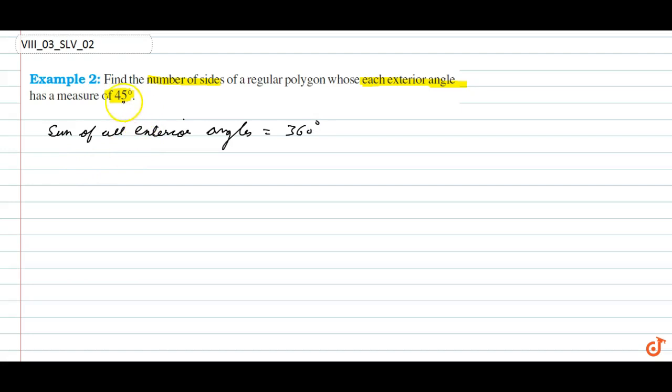So if each angle is 45 degrees, let's assume and find how many exterior angles there will be. 360 divided by 45, that will be 8 times. So number of exterior angles is equals to number of